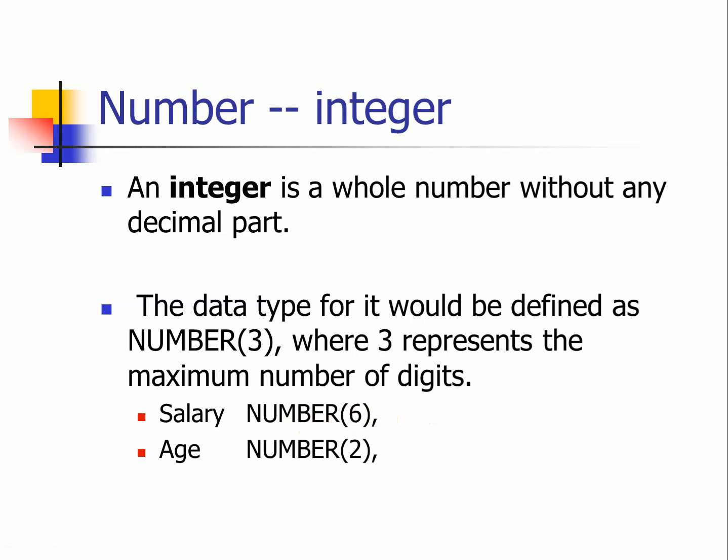Age is the same thing — if we put NUMBER(2), that means you can hold numbers from 0 to 99. If you have someone older than 99 years old, this database cannot hold it. Therefore, when you design a database you need to put all of these considerations into your implementation.